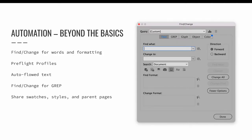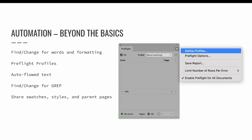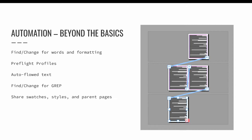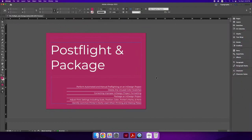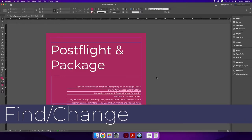Let's take our automation techniques to the next level. In addition to basic techniques, InDesign users can use Find/Change, preflight profiles, auto-flowing text, and GREP to increase design efficiency. We can also share swatches, styles, and parent pages with others so they don't have to reinvent the wheel. In this demo I'm going to show you a few things you can add to your repertoire to increase your design efficiency. Let's get started by opening the Find/Change dialog — in InDesign, you can find it via the Edit menu, choose Find/Change.